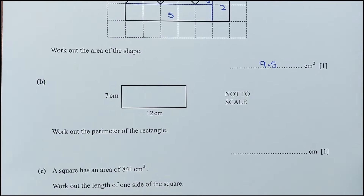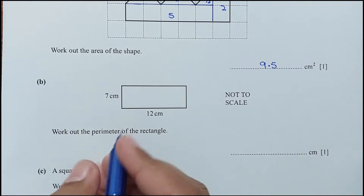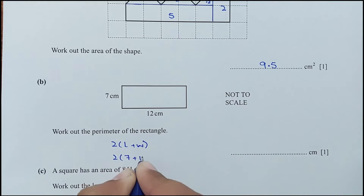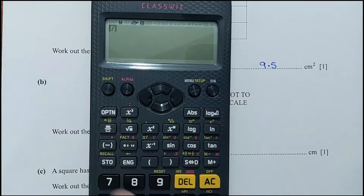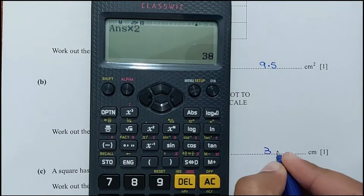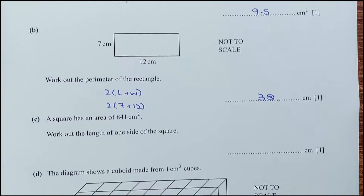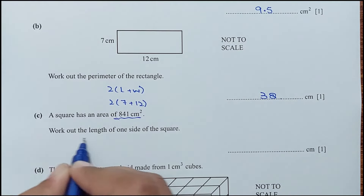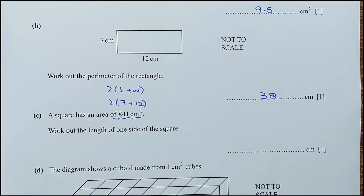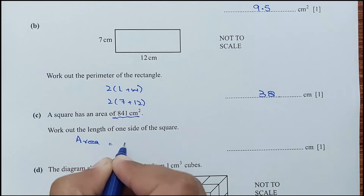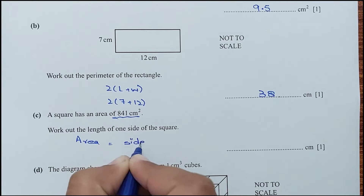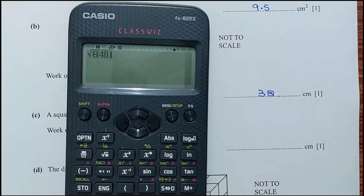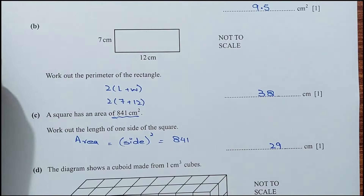For part B, work out the perimeter of a rectangle with dimensions 7 and 12. Perimeter = 2 × (7 + 12) = 2 × 19 = 38 cm. For part C, a square has area 841 cm². The side length is the square root of 841, which is 29 cm.